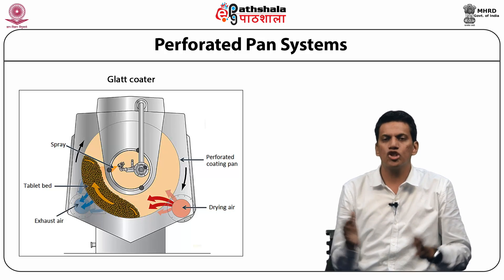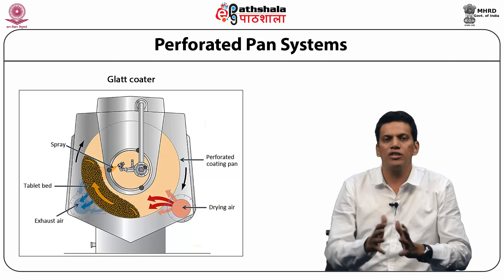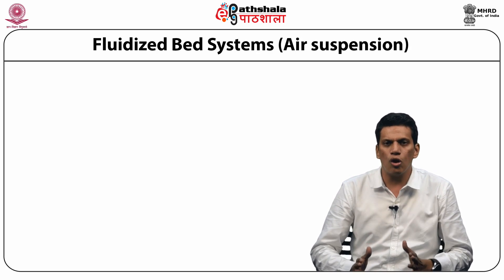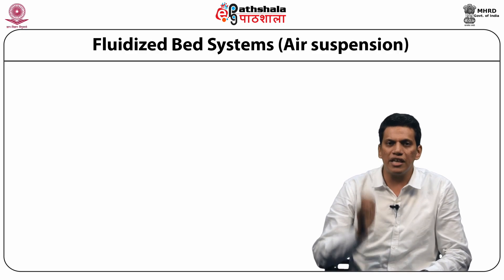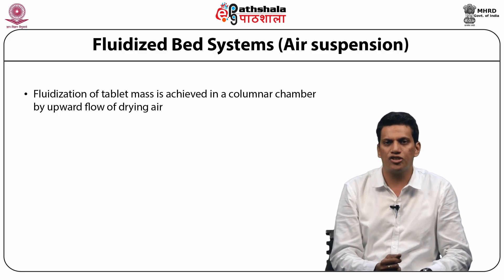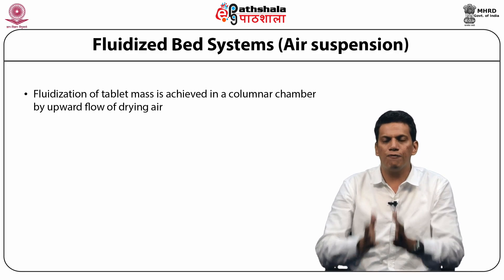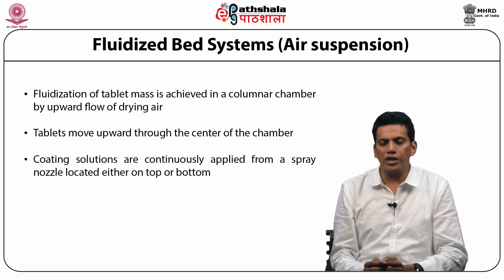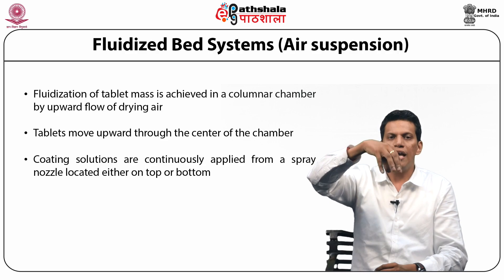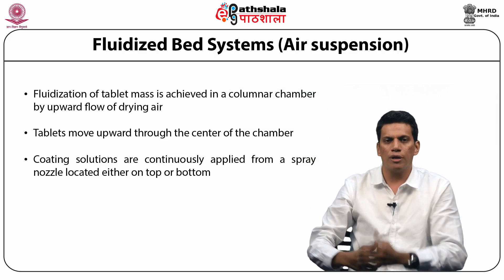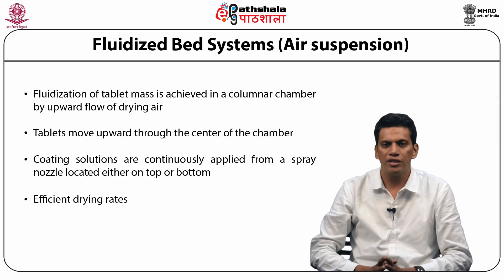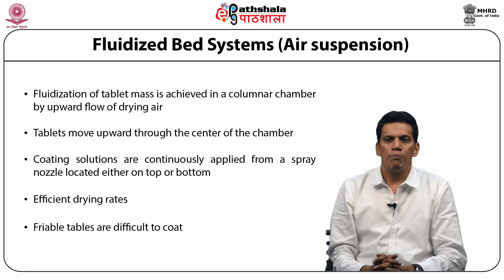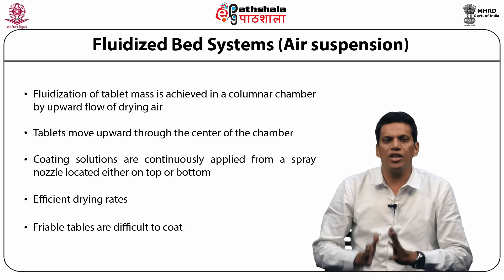The third type is the fluidized bed system, also called the air suspension system. In this system, fluidization of the tablet mass is achieved in a columnar chamber by upward flow of drying air. Tablets move upwards through the center of the chamber, and coating solutions are continuously applied from a spray located either at the top or bottom. This results in efficient drying rates. The disadvantage is that friable tablets are very difficult to coat because it causes attrition and breakage.